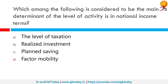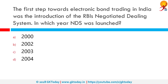Which among the following is considered the main determinant of the level of activity in national income terms? The correct answer is realized investment.